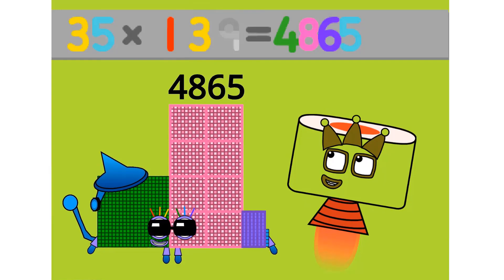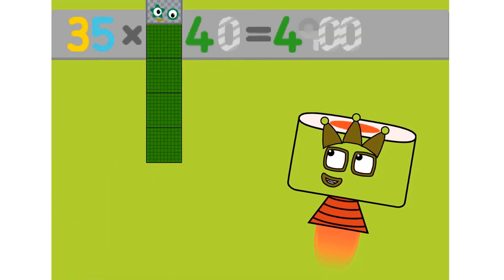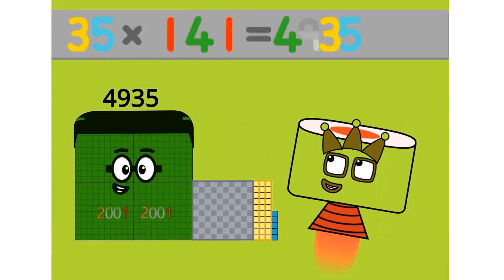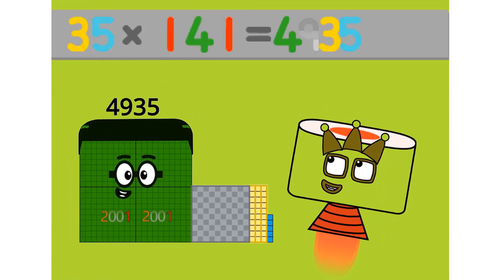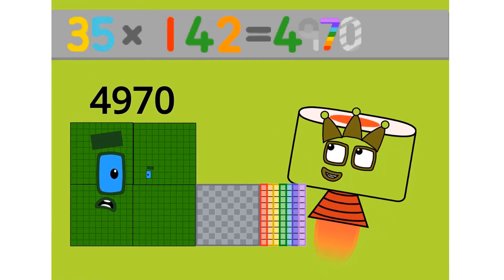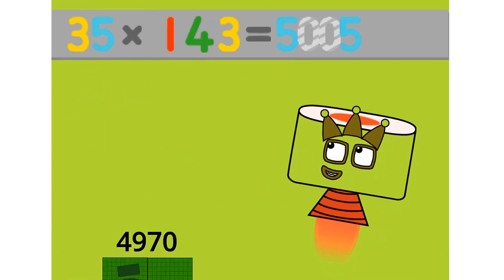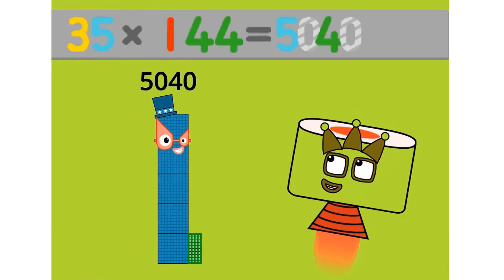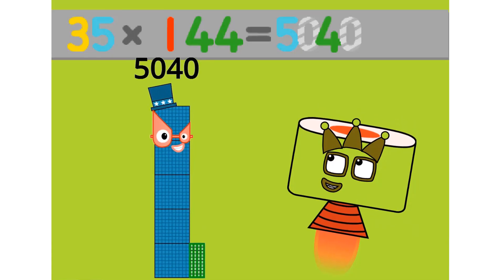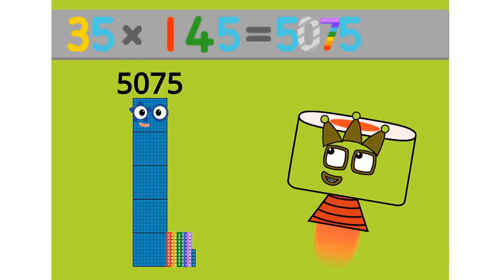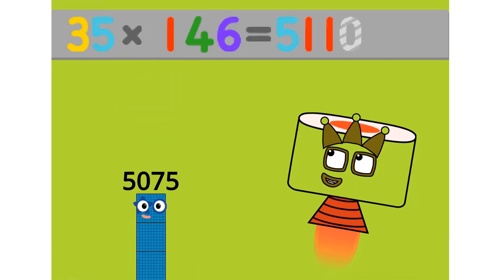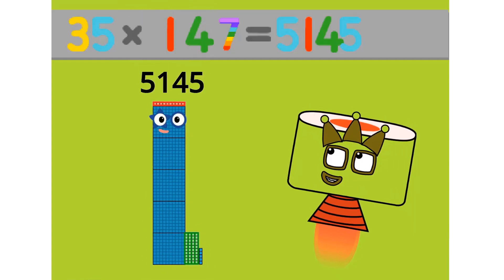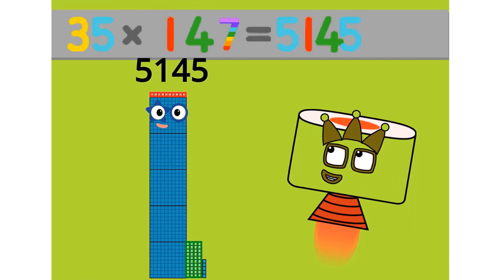35 times 140 equals 4900. 35 times 141 equals 4935. 35 times 142 equals 4970. 35 times 143 equals 5005. 35 times 144 equals 5040. 35 times 145 equals 5075. 35 times 146 equals 5110. 35 times 147 equals 5145.